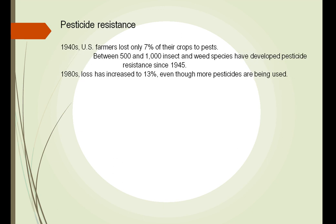We still have a huge problem with pests. In 1940, we only lost 7% of our crops to pests. New insect and weed species have developed since then. So despite the fact that our use of pesticides has gotten better, we have actually increased our loss to 13%.